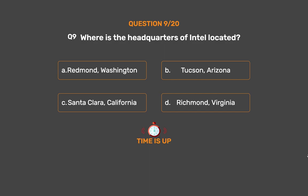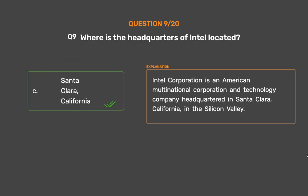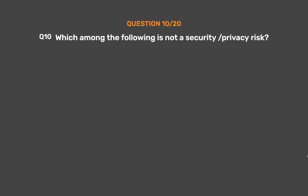The correct answer is Option C: Santa Clara, California. Intel Corporation is an American multinational corporation and technology company headquartered in Santa Clara, California, in the Silicon Valley.